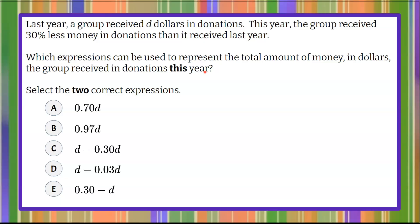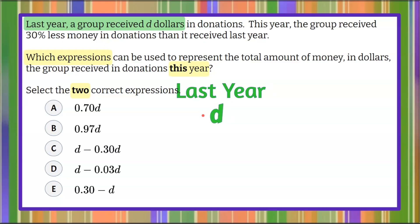Welcome back. We're going to begin by understanding we're defining which expressions represent this year, and we're picking two. So let's go back to the information given. We have last year, a group received D dollars. So D as the variable represents how much money they received last year in donations.